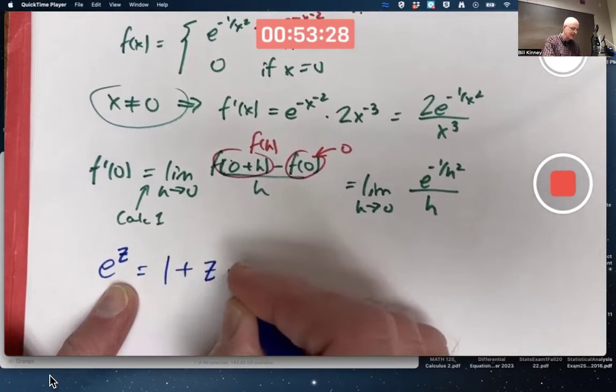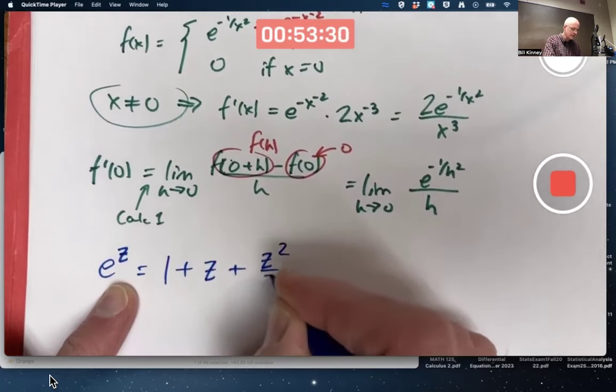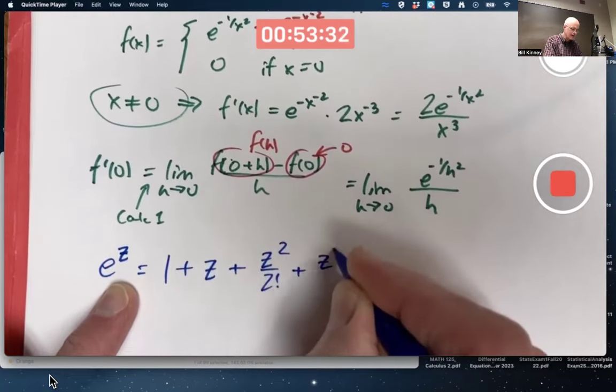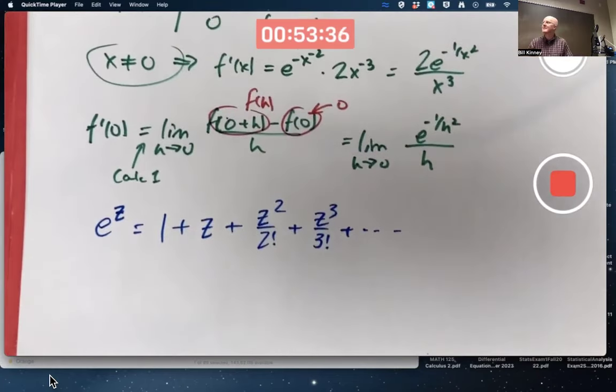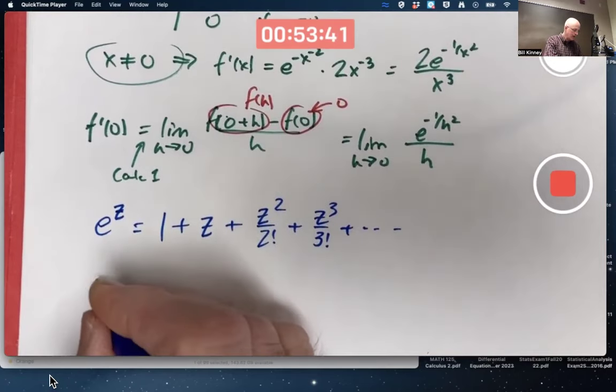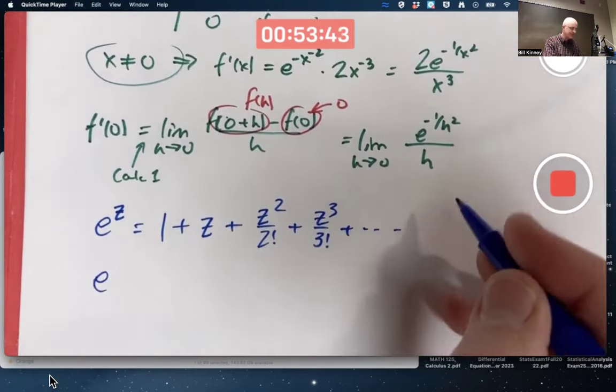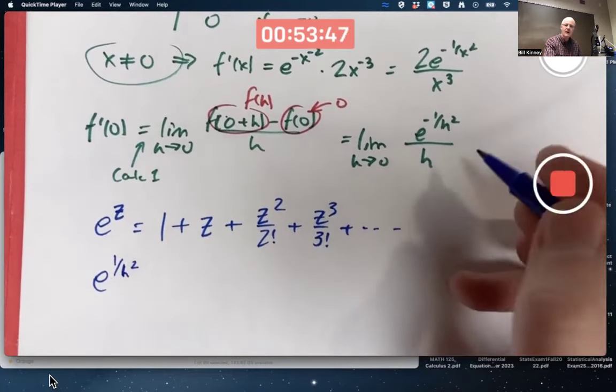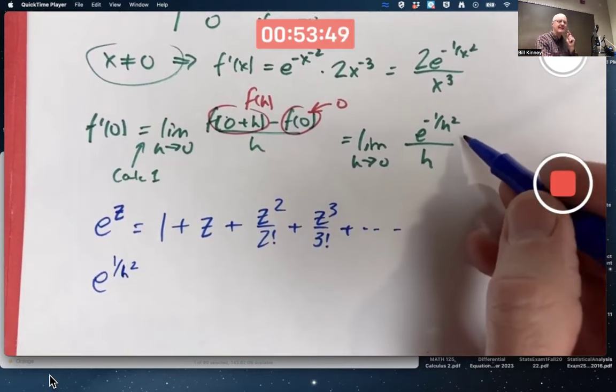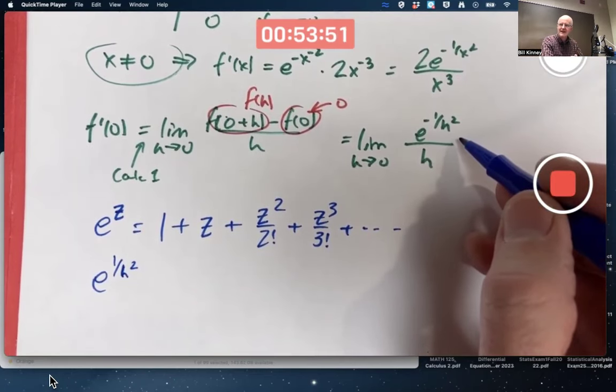And it turns out that even when z is complex, this is true and can be made sense of. And it also can be made sense of if we replace z with, oh say, for example, something like one over h squared. Why am I picking one over h squared? Because I have e to the negative one over h squared there. And you'll see what I'm doing in a few minutes.